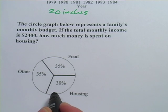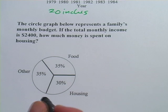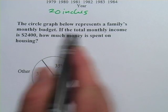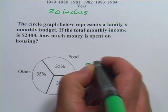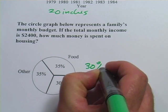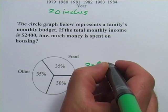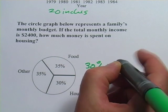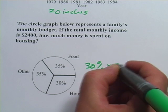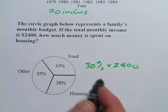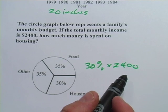Well, 30% of their budget is housing. Their budget is $2,400. So we just have to take 30% of $2,400 — and 'of' usually means multiplication in word problems. So we're going to write 30% times $2,400.